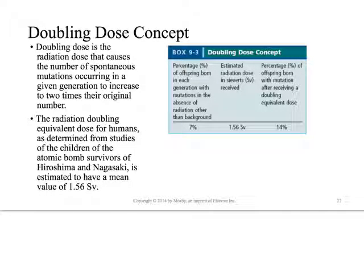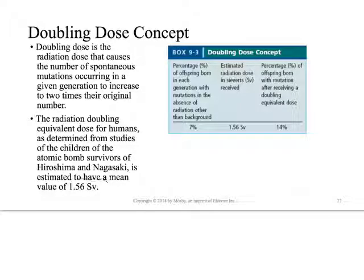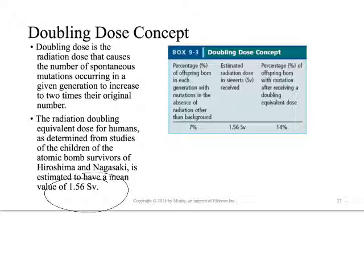Our textbook discusses the doubling dose concept, which came from both Hiroshima-Nagasaki data and experiments by Muller and other scientists on fruit fly populations. The doubling dose is the radiation dose that causes the number of spontaneous mutations occurring in a given population to increase by two. It's assumed to have a mean value of 1.56 Sievert - you don't need to memorize that number, but it's helpful to know we've arrived at a number that lets us know what we need to stay well below. We do manage to stay well below this for both occupational exposure and our patient populations.